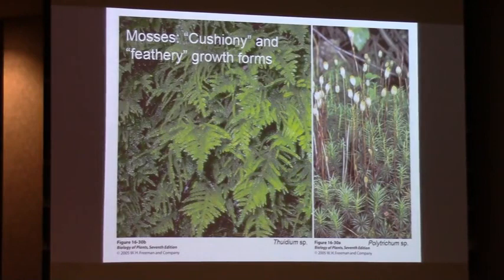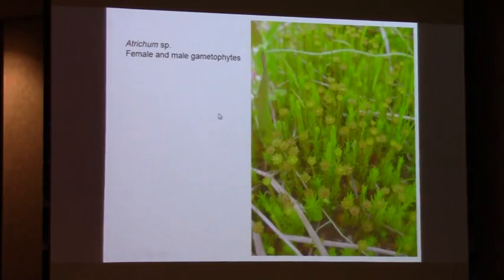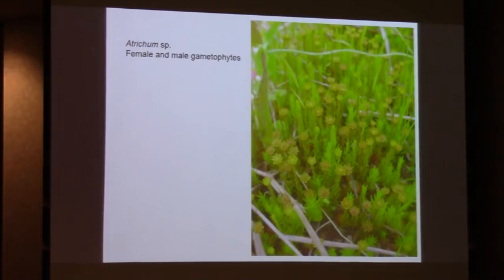And we've got the mosses. Basically there are two forms: some have a cushioning habit on the right, and others have a feathery growth form on the left. This is a rather typical moss. We've got the green gametophyte generation below, and the spore-producing sporophyte generation above. The spores are produced in the capsule or sporangia. Mosses come in male and female, so we've got a mixture of female and male gametophytes here. A student once asked me why I always say male before female - so I switched it up.